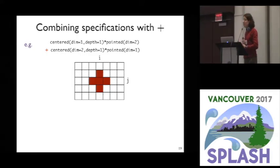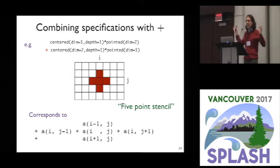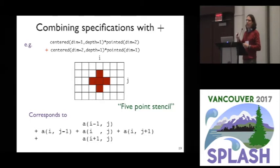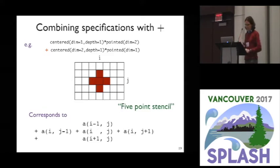Here's another example with a one-dimensional pattern in a two-dimensional array: centred in one dimension and pointed in the other, giving a little slice. The plus operator combines regions by overlaying them — a disjunction of constraints. This describes a classic pattern seen in image processing, the game of life, cellular automata: the five-point stencil, reading from the current element plus the one above, below, right, and left.